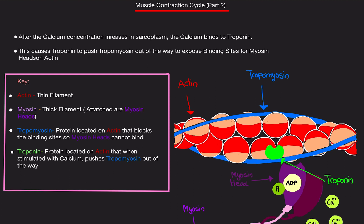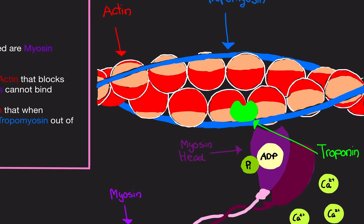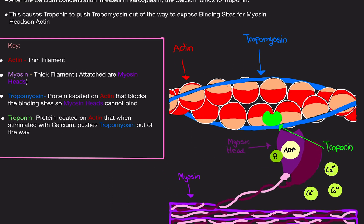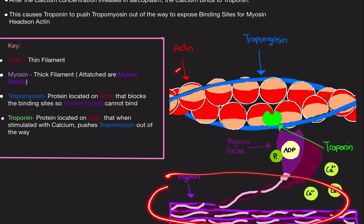So this figure I draw here — what we're looking at is a sarcomere essentially. What we have here is actin and myosin. The ball-looking things are actin, and this bottom piece here is the myosin — this right here is myosin, and this is actin. Actin is a thin filament, and myosin is a thick filament.